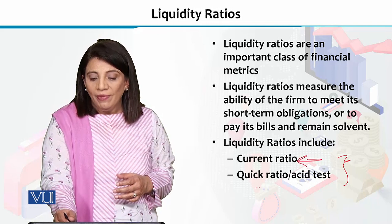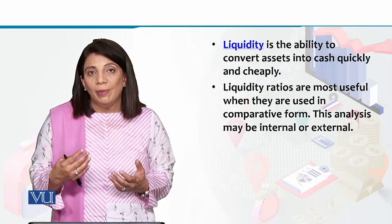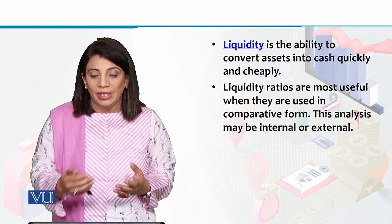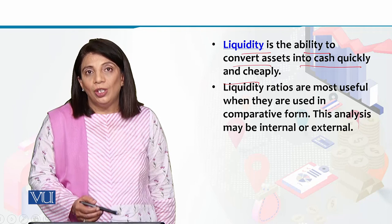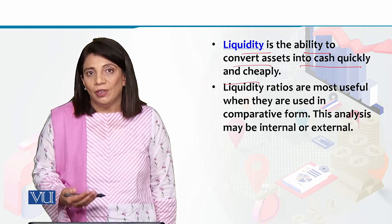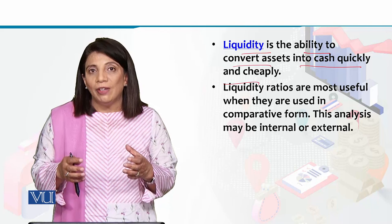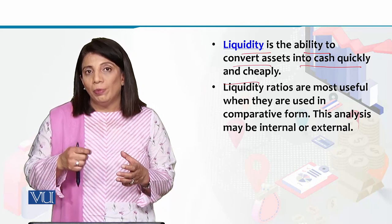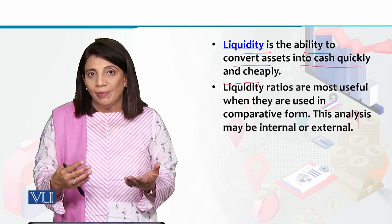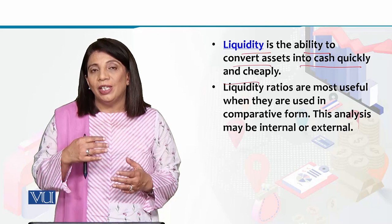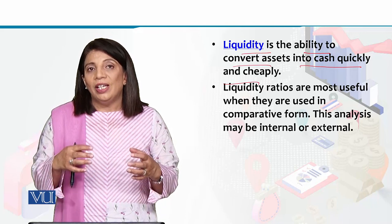The first one is the current ratio, and then we have the quick ratio, which is also known as the acid test. Liquidity is the ability to convert assets into cash quickly and cheaply. Liquidity ratios tell us how much ready cash is available for a company's short-term, immediate expenses.